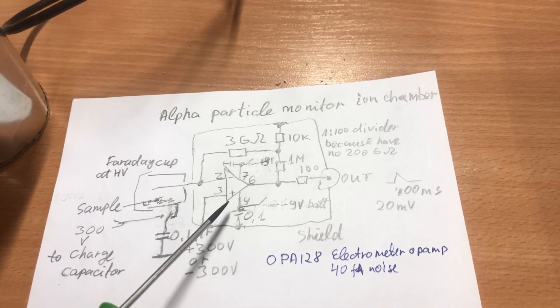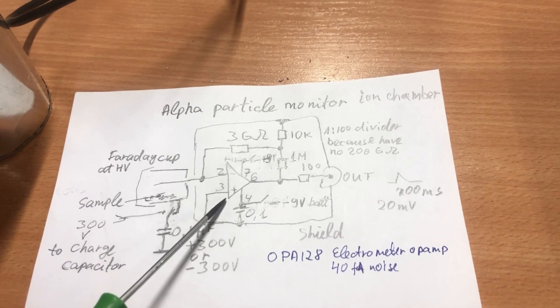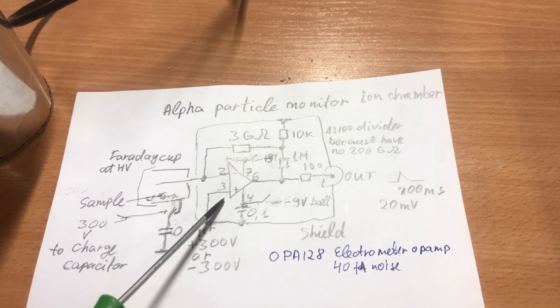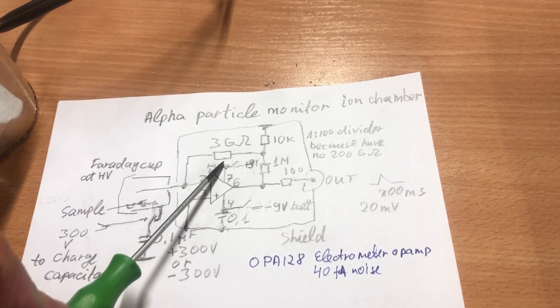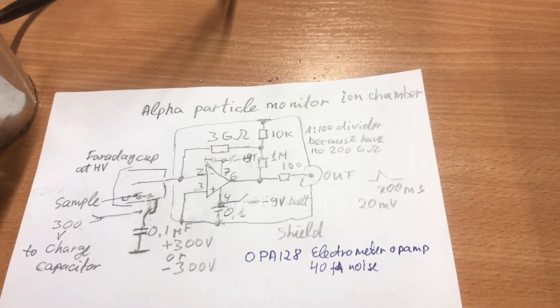Circuit is based on electrometer operational amplifier. Feedback resistor is 3 gigaohm because I did not have 200 gigaohm.